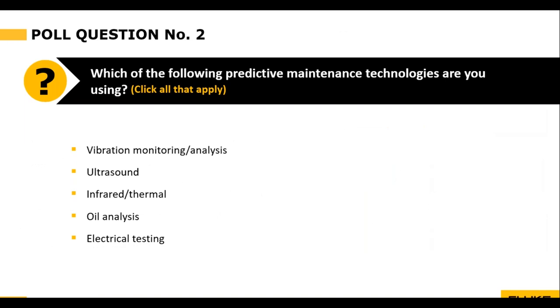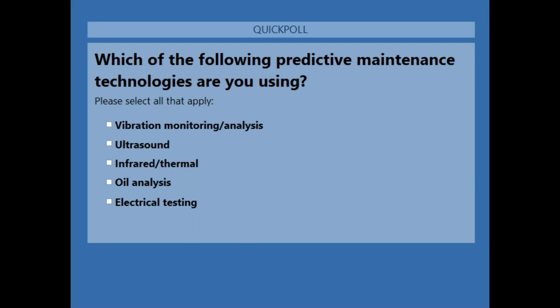Now we're ready to go into our second poll question. Which of the following predictive maintenance technologies are you currently using? Vibration monitoring and analysis, ultrasound, infrared, oil analysis, electrical testing — you can choose as many as you are using. This will give us a feel for what you have already enacted and what you might be thinking about. It depends on what kind of plant you're running, what kind of machines you have, and what kind of indicators you're looking for.